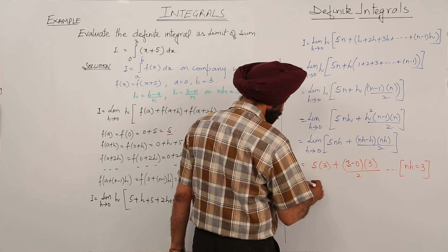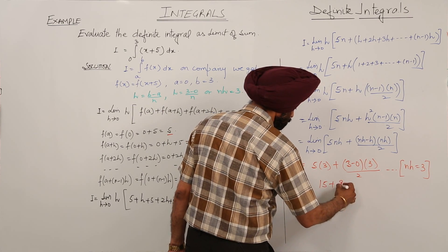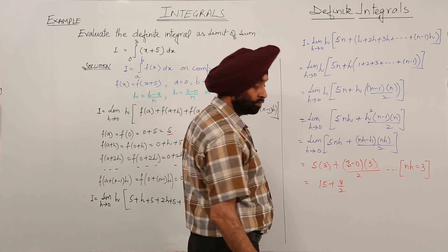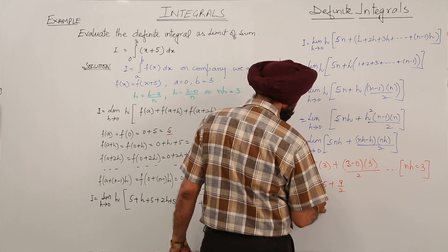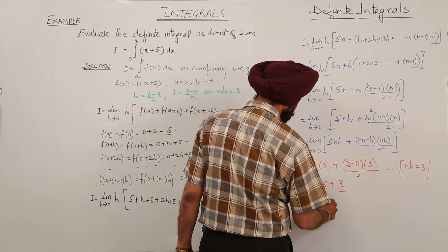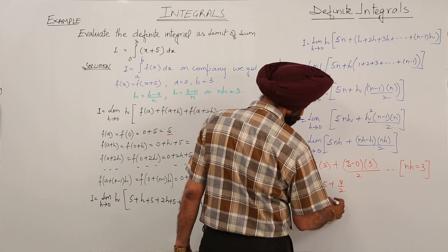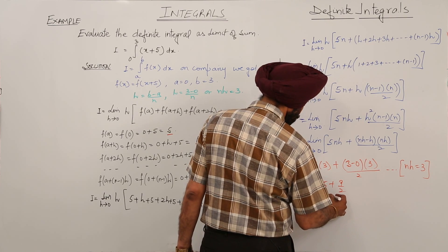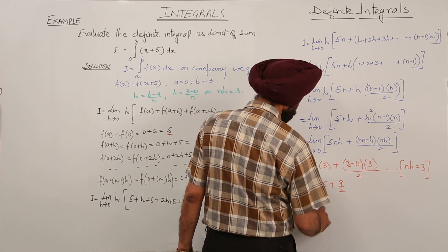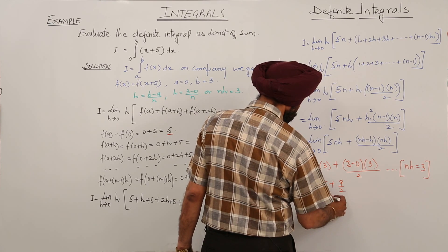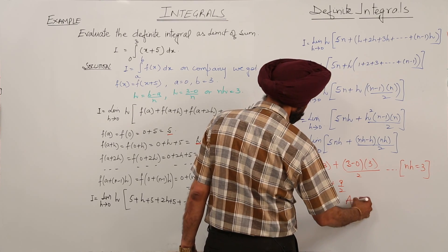Now nh is equal to 3, so this becomes 5 times 3 plus (3 minus 0) times 3 upon 2, because h approaches to 0. This becomes 15 plus 9 upon 2, which is 39 by 2. The answer is 39 by 2.